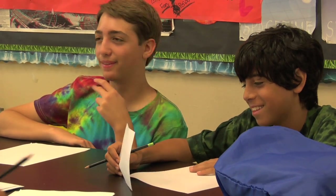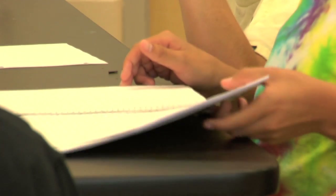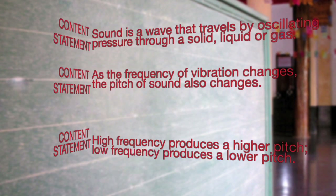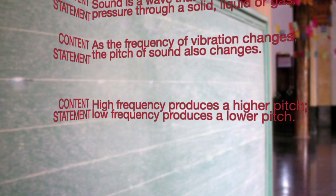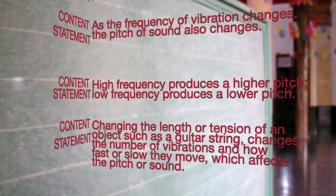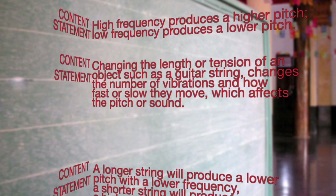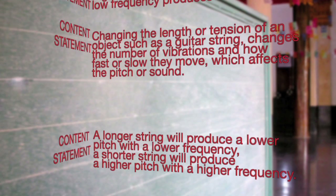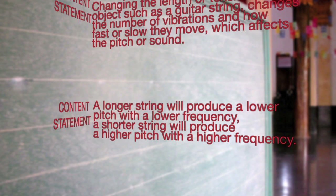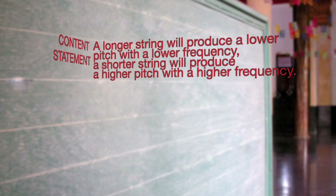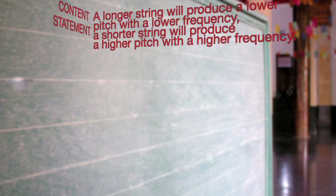Now that you've learned about frequency and pitch, let's go over a few content statements. Sound is a wave that travels by oscillating pressure through a solid, liquid, or gas. As the frequency of vibration changes, the pitch of sound also changes — high frequency produces higher pitch, low frequency produces lower pitch. Changing the length or tension of an object, such as a guitar string, changes the number of vibrations and how fast or slow they move, which affects the pitch or sound. A longer string will produce a lower pitch with a lower frequency. A shorter string will produce a higher pitch with a higher frequency.